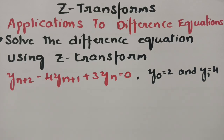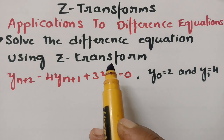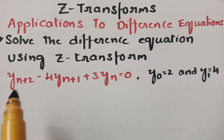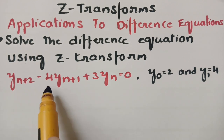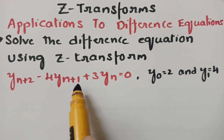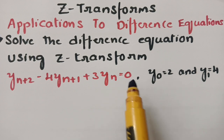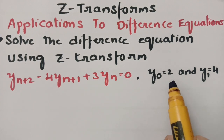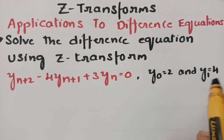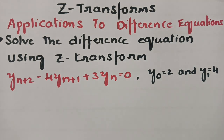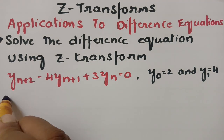In this video, I am going to explain the applications to difference equations using Z-transforms. In today's video, I am going to solve the difference equation: Y(n+2) minus 4 times Y(n+1) plus 3 times Y(n) equals 0. Given conditions are Y(0) equals 2 and Y(1) equals 4. Let's get started to solve this.